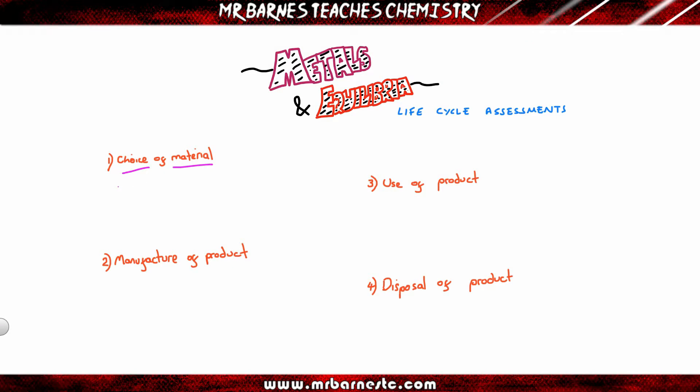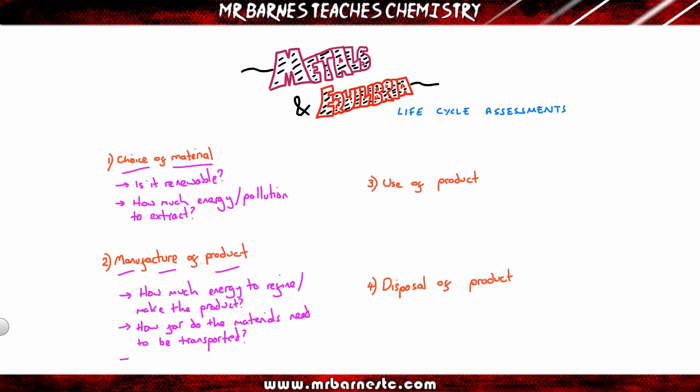If we talk about choice of material, if you've got one that's renewable, that's the one you want to go for. How much energy or pollution is it going to produce? The one with the least, that's the one you're going to go for. Manufacture of product: how much energy to refine it or to make the actual product? The one with the least, that's going to be the best. How far do you have to transport the materials? If it's a long way, that's going to use up fossil fuels again, so that's going to be a bad thing. So you're going to go for the one that's nearest. And is the energy source renewable? Are you using solar power to do it? If you're using that, that's your advantage. So you'd use that manufacturing technique.